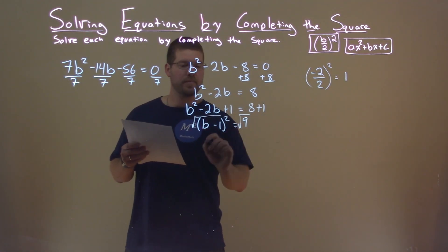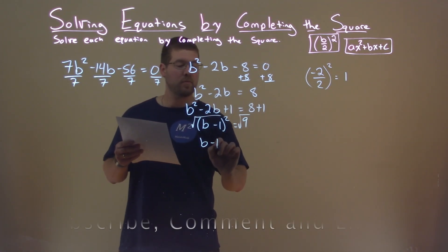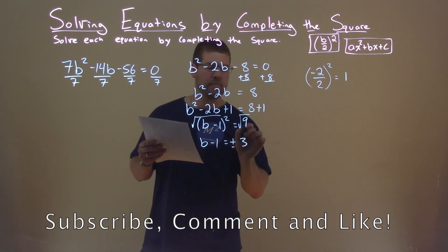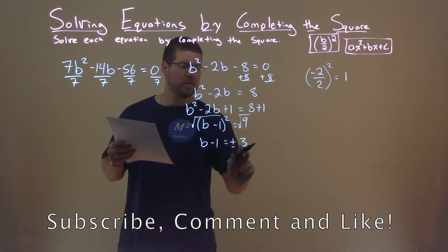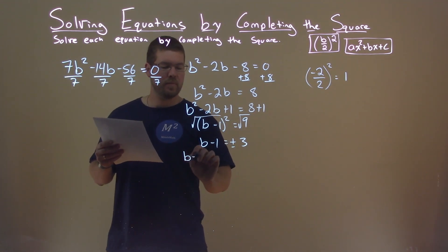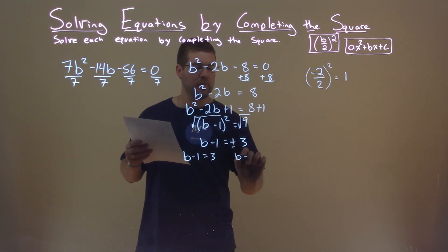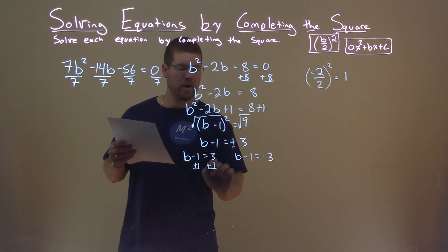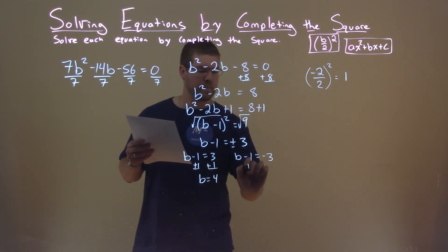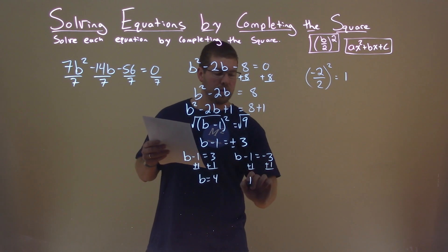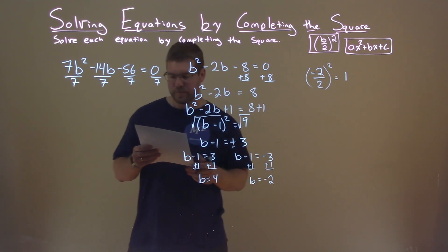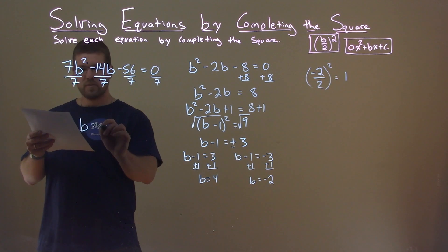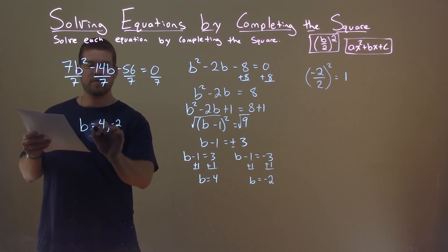Taking the square root of both sides: b minus 1 equals plus or minus 3 — don't forget it. Breaking into two equations: b minus 1 equals positive 3, and b minus 1 equals negative 3. Adding 1 to both sides: b equals 4. Doing it again: b equals negative 2. Our two solutions are b equals 4 and negative 2.